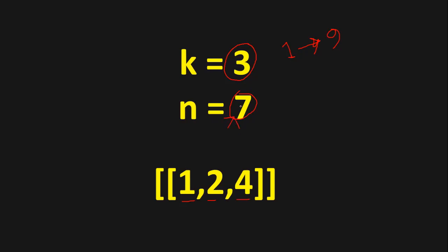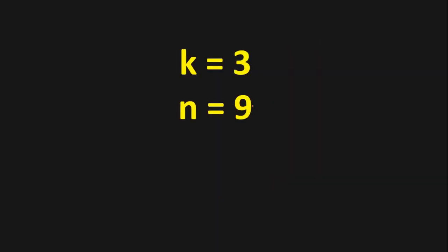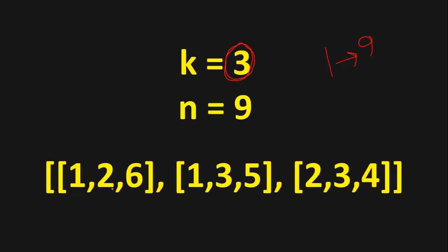If you are given k equals 3 and n equals 9, that means you have to find combinations of three numbers from 1 to 9 that add up to 9. Here we have three combinations: 1,2,6 — 1,3,5 — and 2,3,4. Each of them sums to 9.